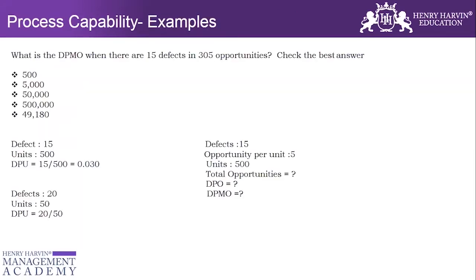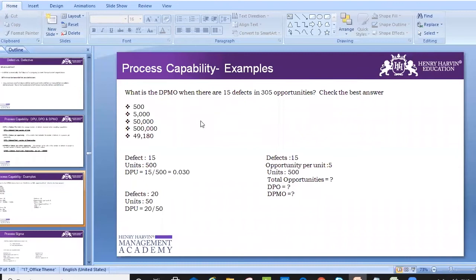Now let's do a practical demonstration of calculating DPU, DPO, and DPMO. We have an example with 15 defects and 305 opportunities. Let's go through the calculation step by step.